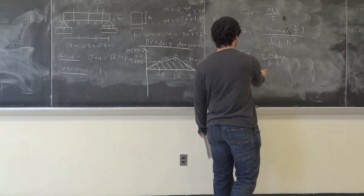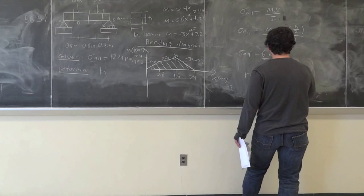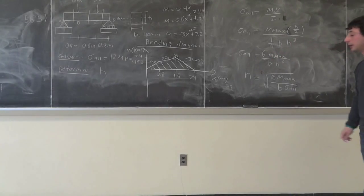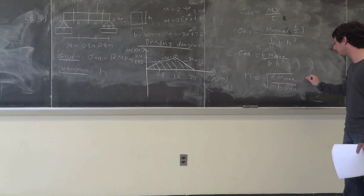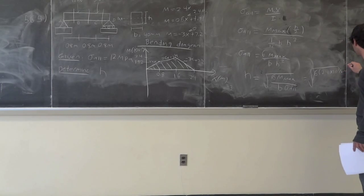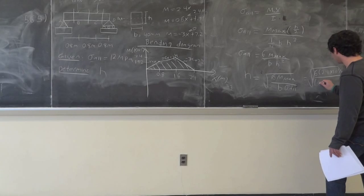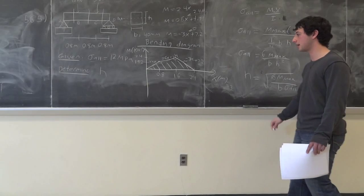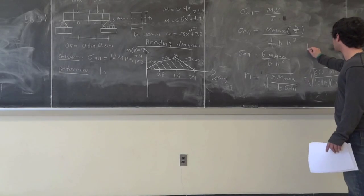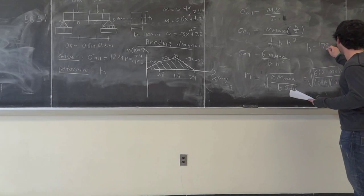Solving for h: h equals the square root of 6·M_max divided by (b·sigma_allowable). Substituting values: square root of (6 times 2.4 times 10³ N·m) divided by (0.04 m times 12 times 10⁶ Pa). This gives h equals 173.2 millimeters. When designing this beam, h should be at least this value — if it's under this value, the beam will break.